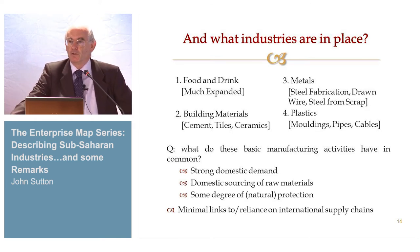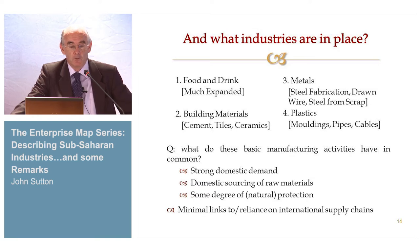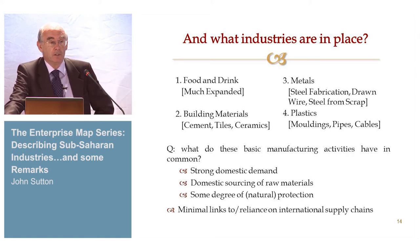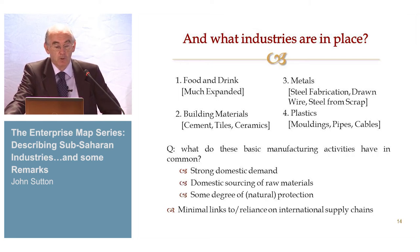What industries are in place? Across these countries, there's a certain broad range of first-level or basic manufacturing. It covers food and drink — an area hugely expanded in recent years with new entrants and new lines of business. It includes building materials, cement, tiles and ceramics, metals, steel fabrication, drawn wires, steel made from scrap, and plastics like moldings, pipes, and cables. What do these basic manufacturing activities have in common? Strong domestic demand, domestic sourcing of raw materials in most cases, and some degree of natural protection. These tend to be very viable sectors, but with minimal links to or reliance on international supply chains.